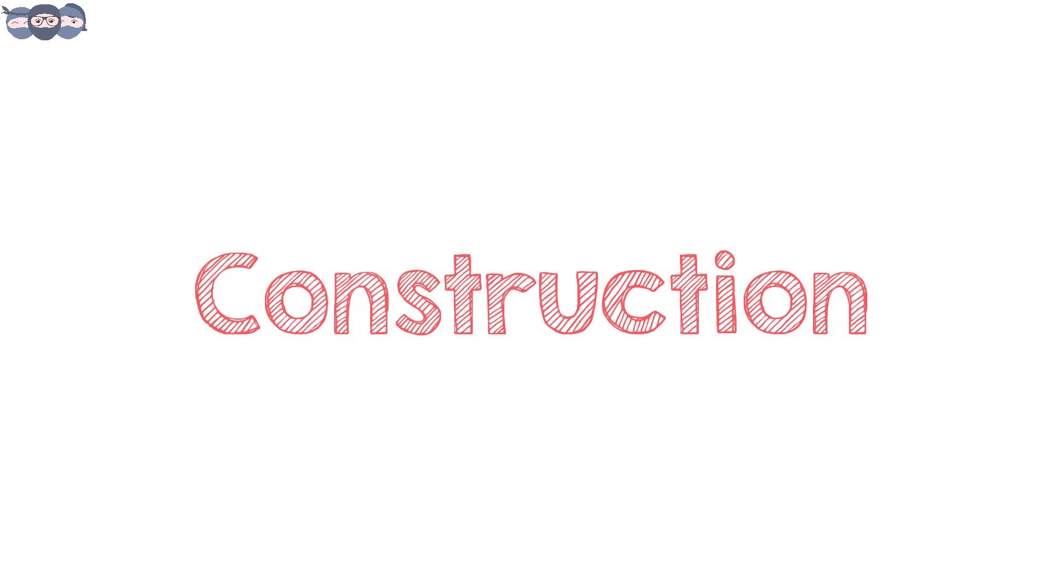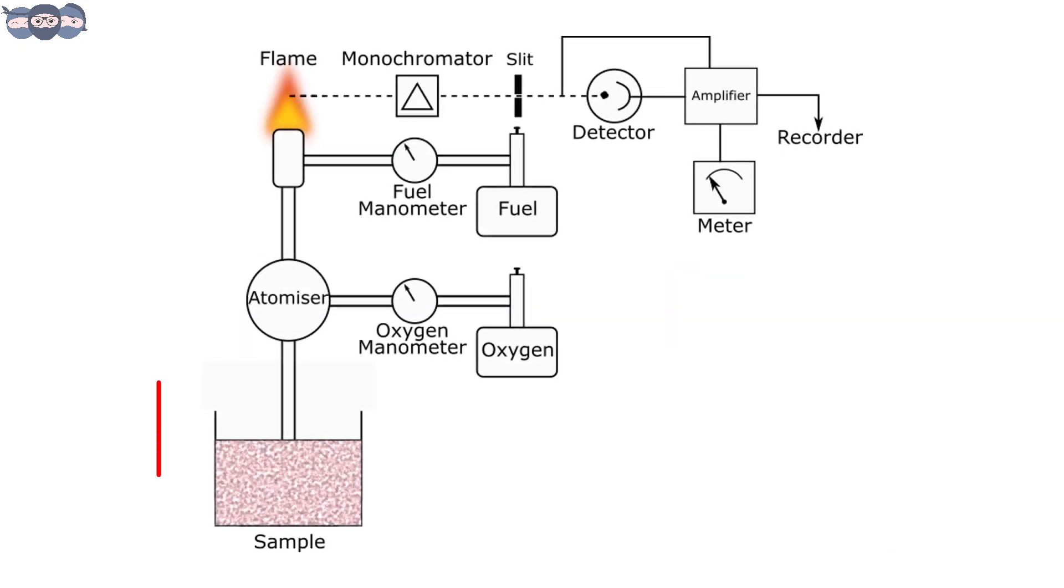Let us proceed by understanding the construction of this instrument. The first component is the sample holder. As seen here, this instrument is made up of an atomizer with flow controls for oxygen and fuel. The atomizer converts the sample to aerosol and passes this aerosolized sample to the next unit.